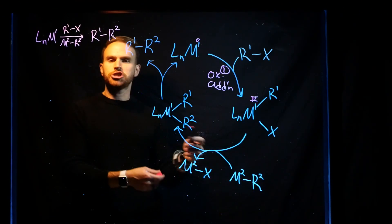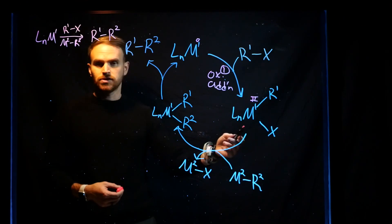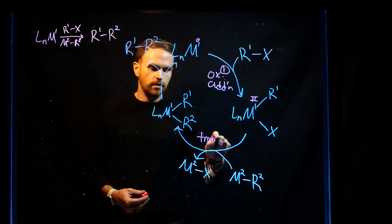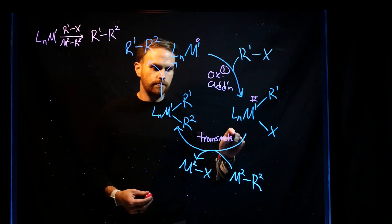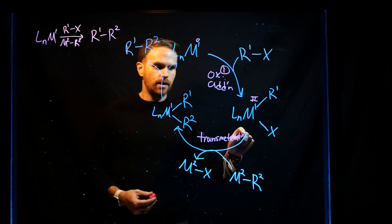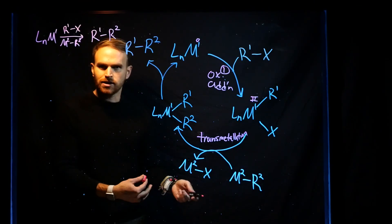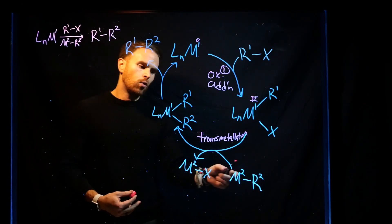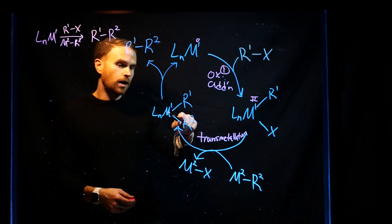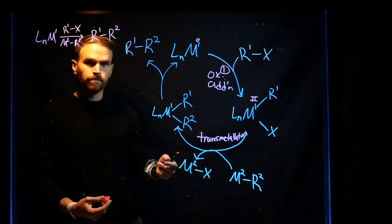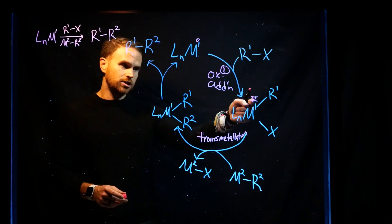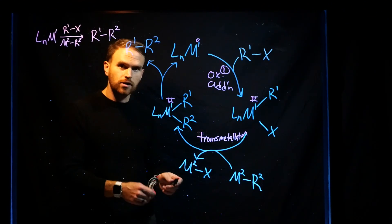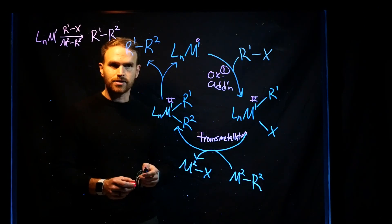The next step shows a second metal coming in and exchanging ligands for one of the ligands on the original metal. This is called transmetallation — sometimes referred to as nucleophilic displacement or substitution — where one metal is transferring ligands with the other. Transmetallation has no impact on the oxidation state, so if it were 2 before, it is still 2. It also has no impact on the overall electron count.